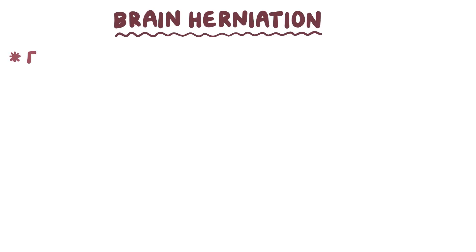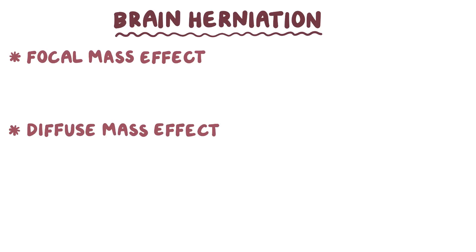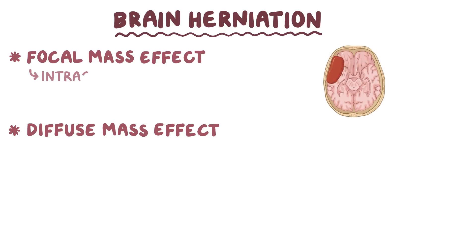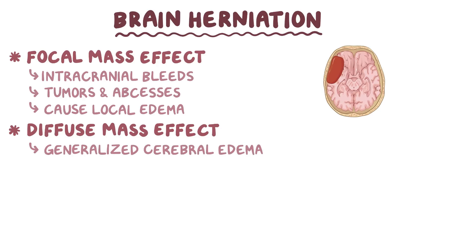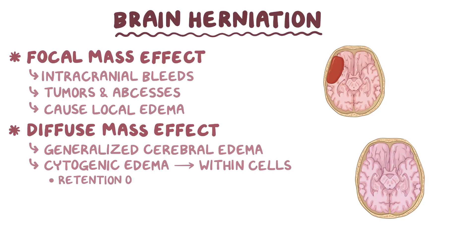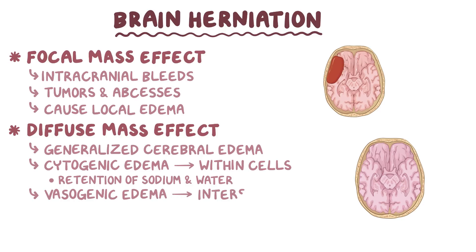Brain herniation can be caused by either a focal mass effect, like an arterial bleed, or a diffuse mass effect, depending on whether the problem is in one area or involves the entire brain. In addition to intracranial bleeds, other causes of focal mass effects are tumors and abscesses, which also create surrounding inflammation causing local edema. Diffuse mass effects are caused by generalized cerebral edema — either cytotoxic edema, with fluid buildup within cells due to sodium and water retention, or vasogenic edema, with fluid buildup in the interstitial space. Causes include large ischemic strokes or meningitis.